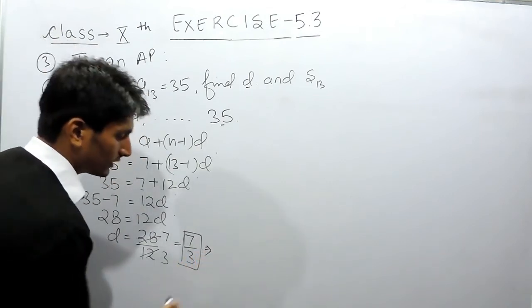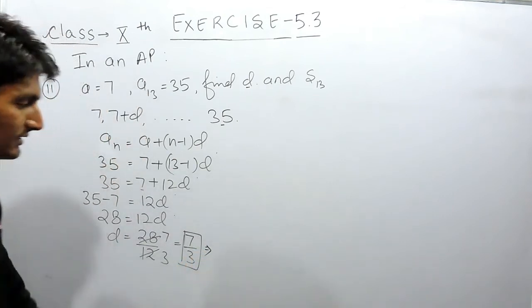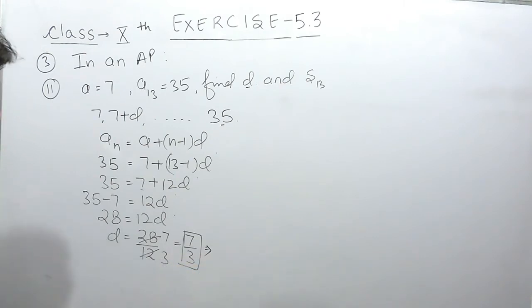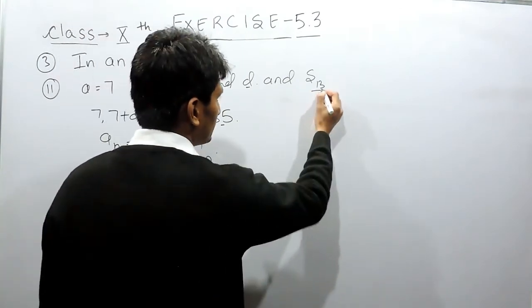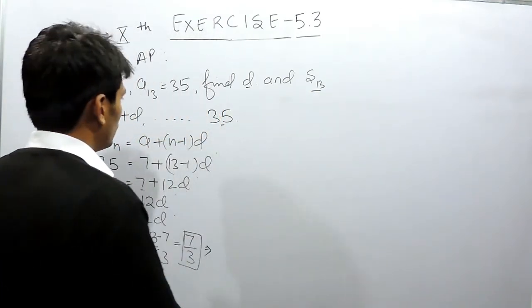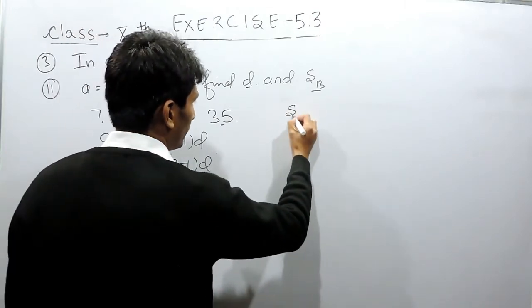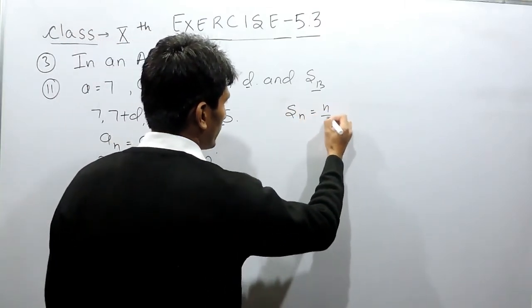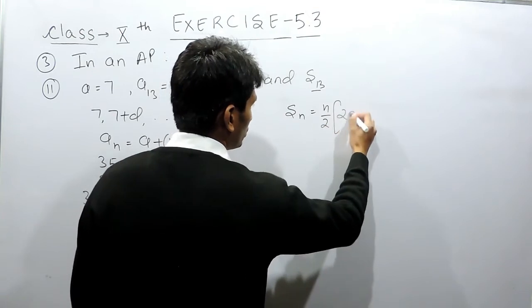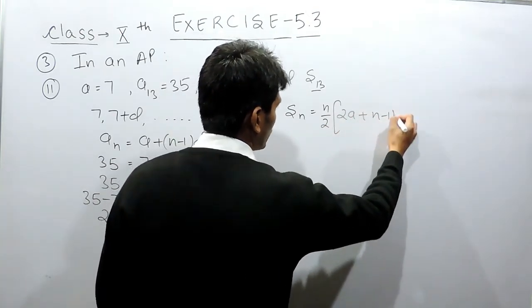You can further solve this and calculate in points or decimals. Now after that, you have to find the sum of these 13 terms. For that, we have a formula: the sum equals n by 2 times (2a plus n minus 1 times d).